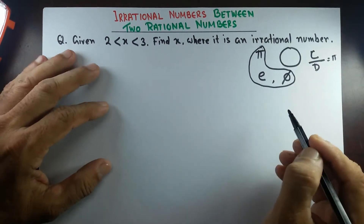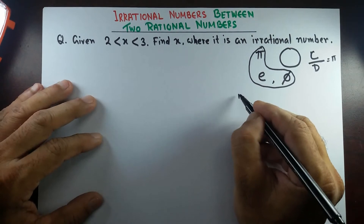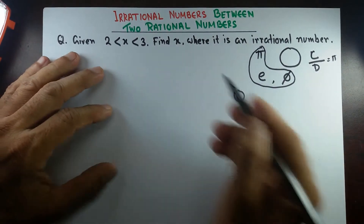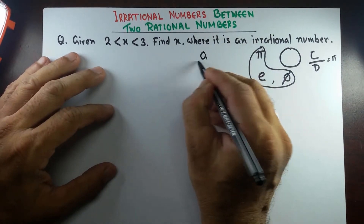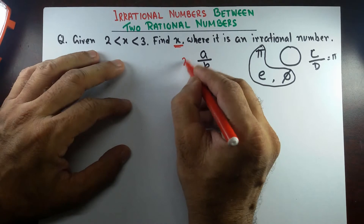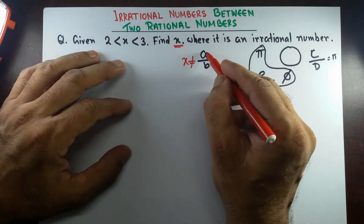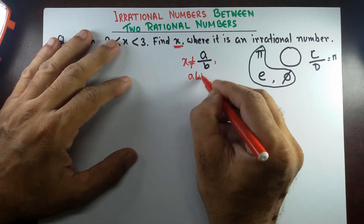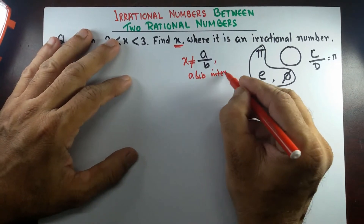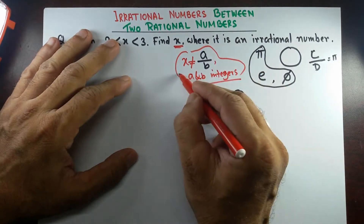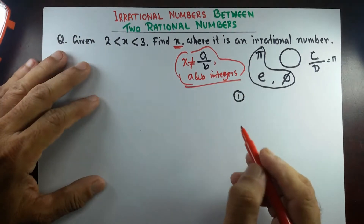Beside these, there are other irrational numbers. If you think that any number that cannot be expressed as a/b — where a and b are both integers — if we cannot write x in this form, then x is an irrational number.